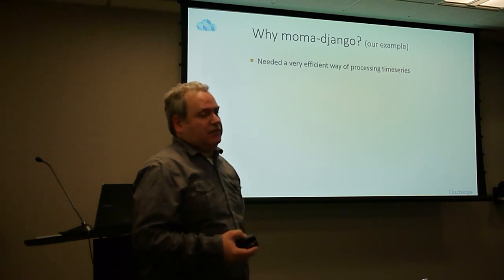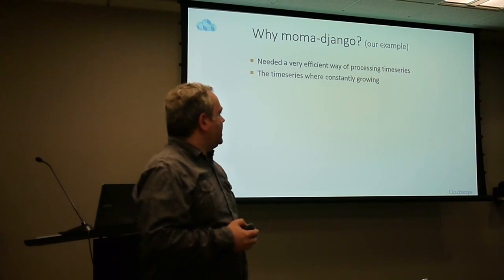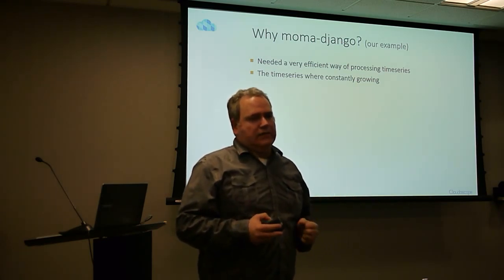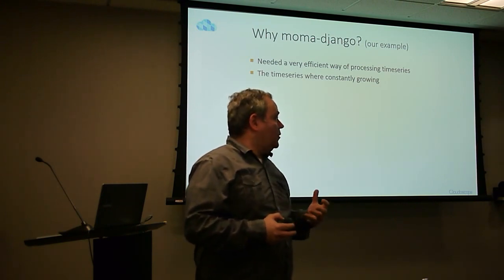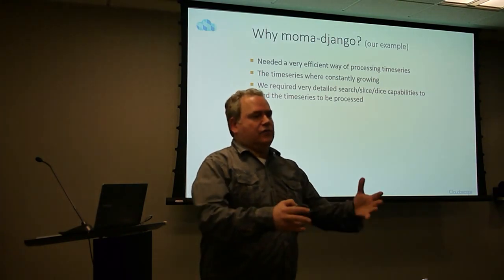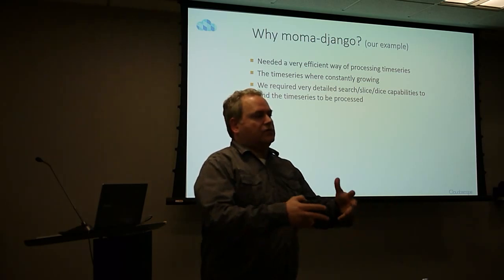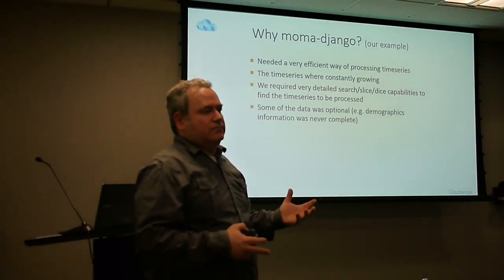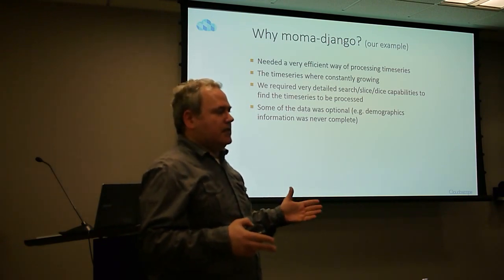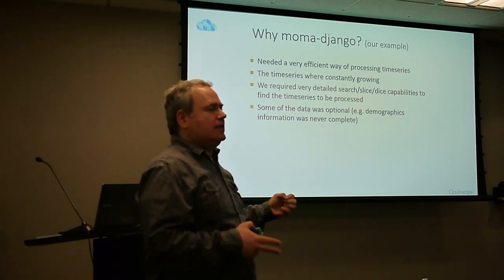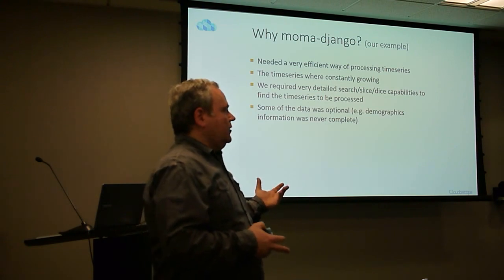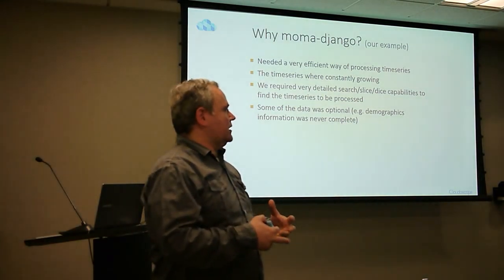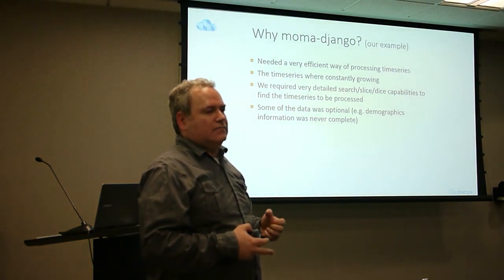Our specific example was that we were processing very large sets of time series — primarily information that came from websites and other sources — and we needed to do that very efficiently, quickly, and also efficiently slice and dice the data to get to a set of time series and perform some activity on it, whether it's correlation, averaging, summing, or some other operation. The data was changing from record to record, so not all time series were the same resolution or the same size. We had demographics information, so we never knew everything about everyone, just bits and pieces. That impacted how the data looked and made it harder and harder to do all that in a relational database.